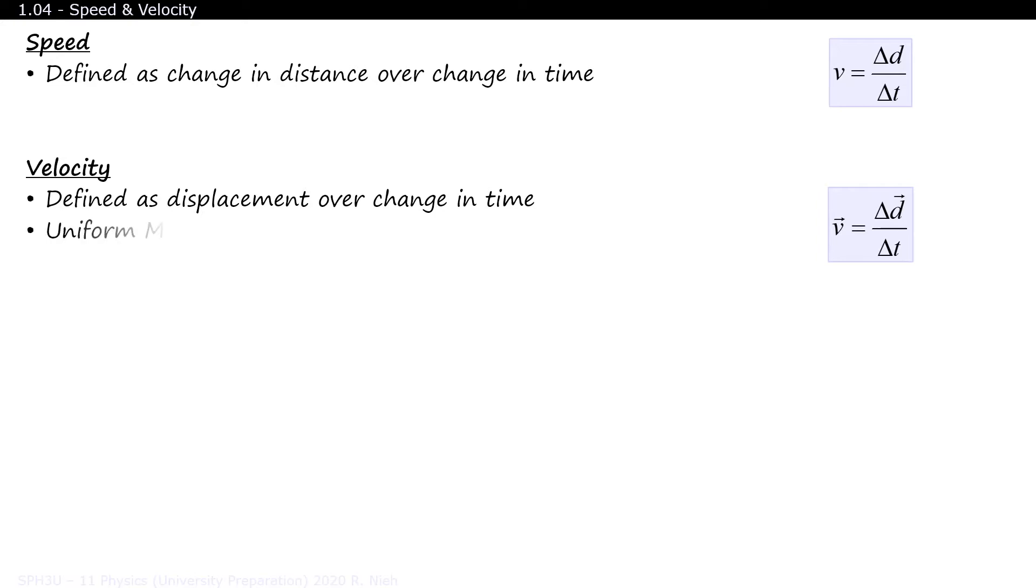Speed is defined as the change in distance over the change in time. If distance is measured in meters, and time is measured in seconds, then the unit for speed would be meters per second. Velocity is defined as the displacement over time. If the object is moving at a constant speed in the same direction, then it's experiencing something known as uniform motion.